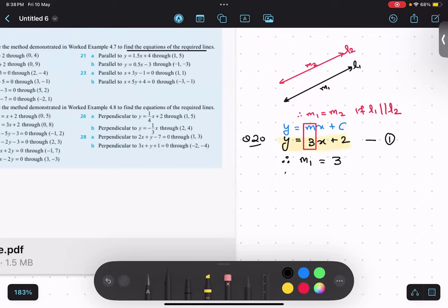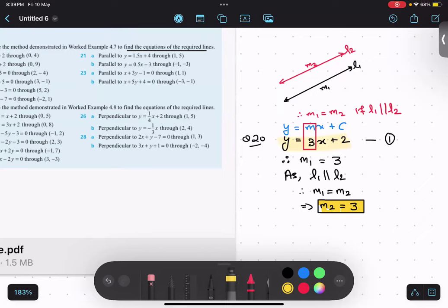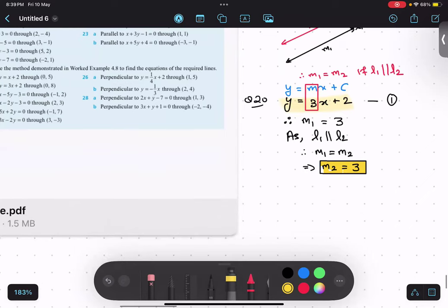So I will write it as line 1 is parallel to line 2. Therefore, m1 equals m2. So my m2 also becomes 3. Any doubt in this case? No, sir. Got it. So I got my m2. We have discussed how to find the equation in previous class, so I am just going to revise.